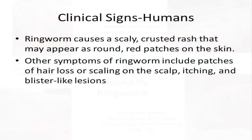In humans, ringworm causes a scaly, crusted rash that may appear as round, red patches on the skin. Other symptoms of ringworm include patches of hair loss or scaling on the scalp, itching, and blister-like lesions.